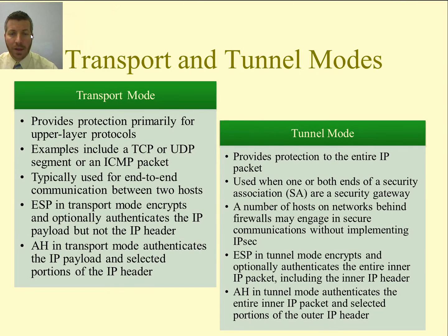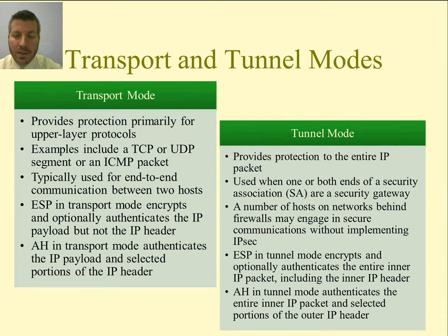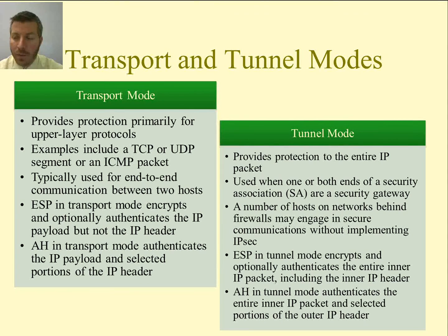There are two modes: transport mode and tunnel mode. Transport mode provides protection primarily for upper-layer protocols — for example, a TCP or UDP segment or an ICMP packet. This is used for end-to-end communication between two hosts. Tunnel mode, on the other hand, provides protection to the entire IP packet, and is used when one or both ends of a security association are a security gateway.